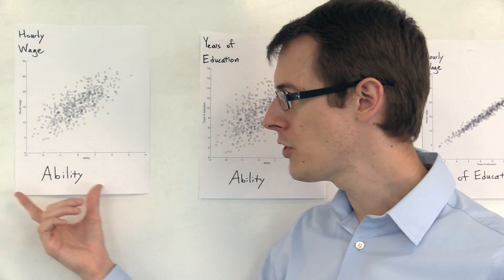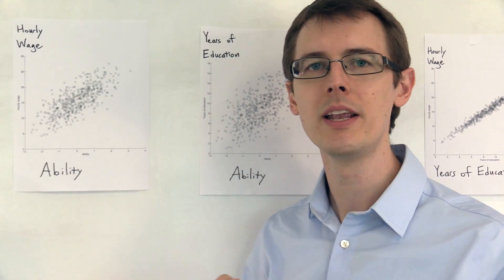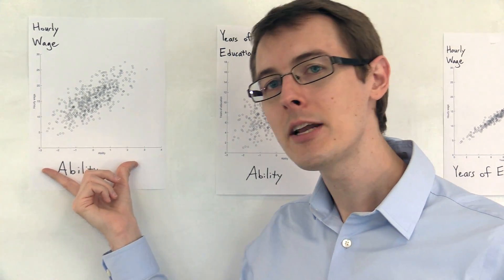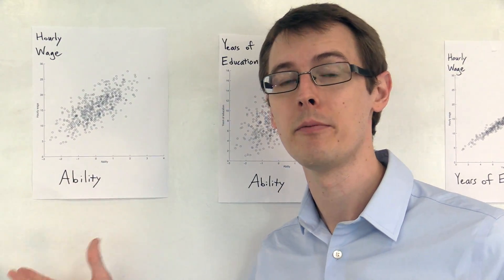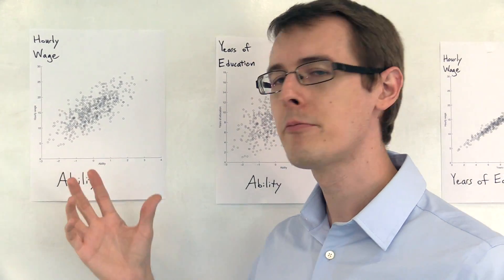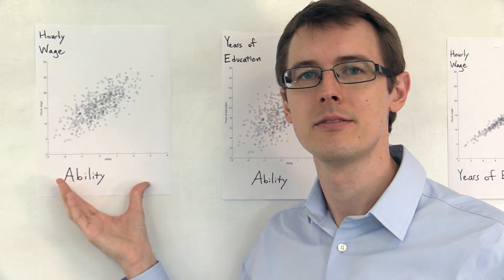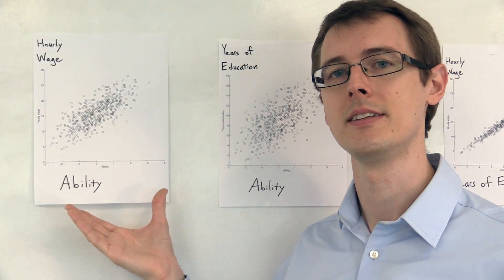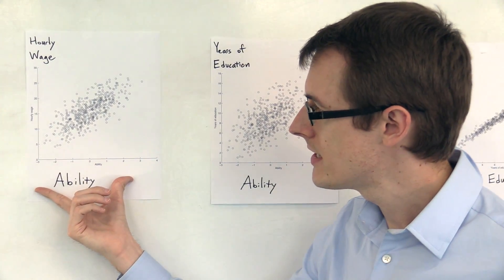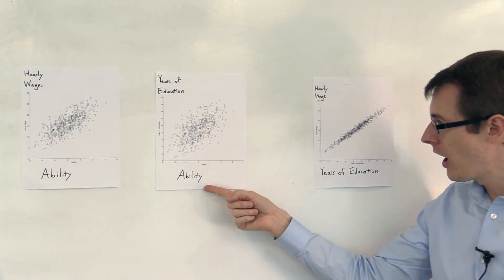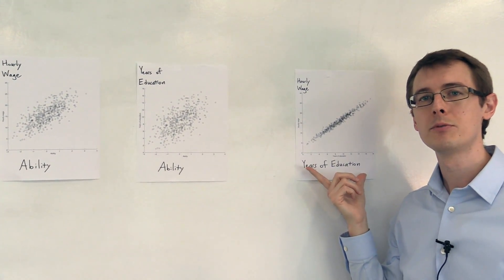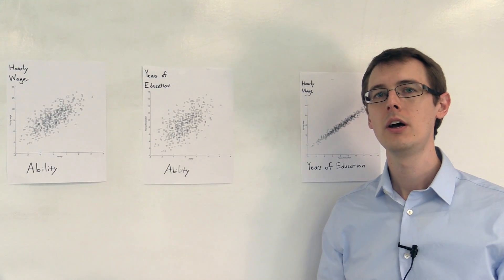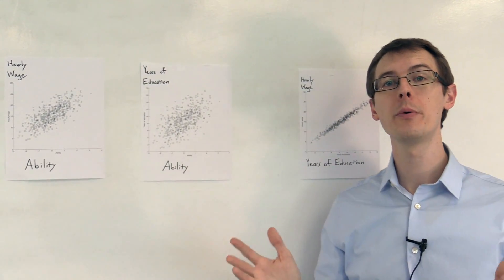So if in your data you don't observe this variable — this innate ability — you can't draw these plots. I can draw them because I've generated the fake data. But in real life, you often don't see the unobserved confounders. That's what makes them unobserved. So you don't know if this kind of thing is going on behind the scenes. Unobserved ability could be driving the observed correlation between education and hourly wage — not a true causal effect of education on wage.